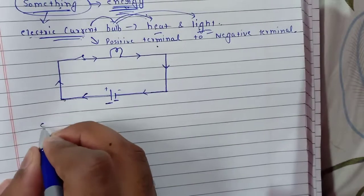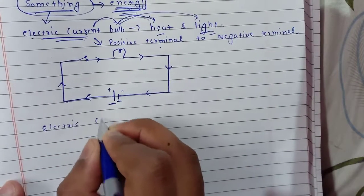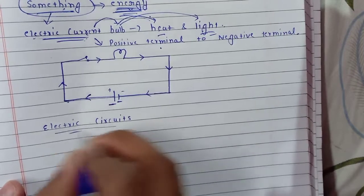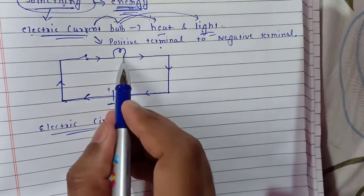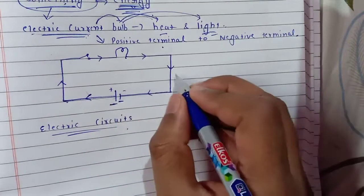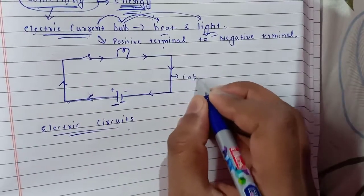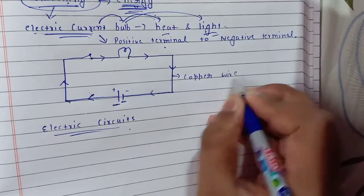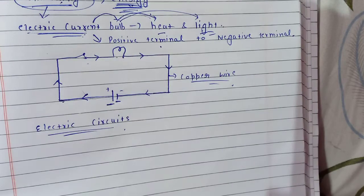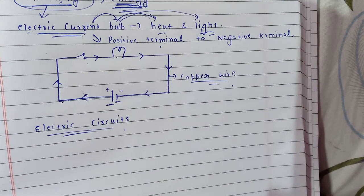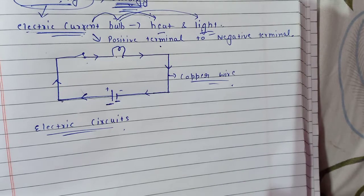Now let us learn about electric circuit. What is an electric circuit? When you connect the two ends of the cell to a bulb using a copper wire, as we switch on, the bulb will automatically start. This is because you have provided a path for electric current to flow from the positive terminal of the battery to the negative terminal.